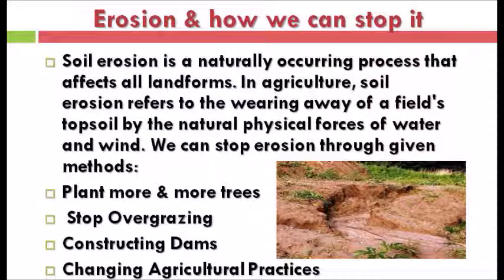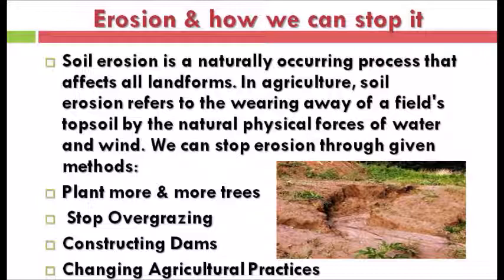We can stop erosion through different methods — we can stop erosion by planting trees and addressing overgrazing issues. Alluvial soil: a fine-grained, fertile soil deposited by water flowing over flood plains or in river beds.